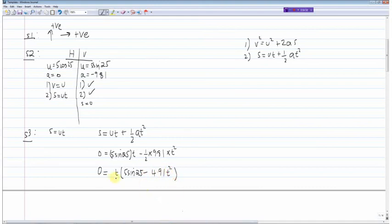So we know that t can either be equal to zero, which is when the motion starts. That's when the displacement is also equal to zero, the vertical displacement. Or t is equal to five sine 25 divided by 4.91, which I calculated to be 1.95 seconds.